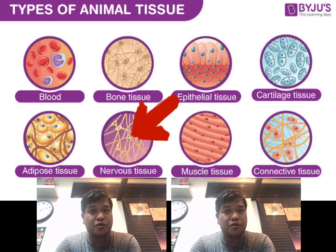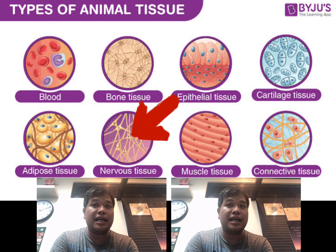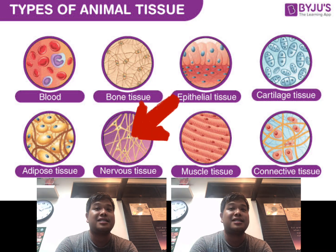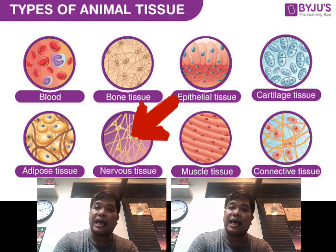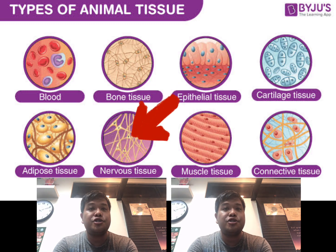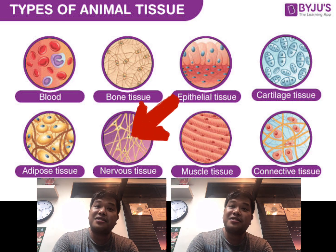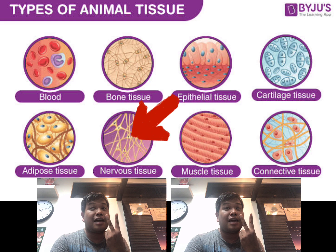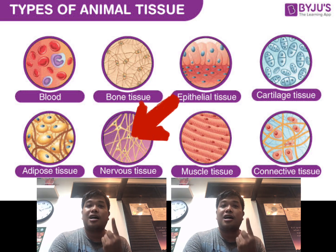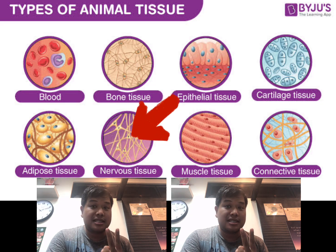Nervous tissue, the last one, is responsible for coordinating and controlling many activities in our body. It controls body movements and also sends and carries signals to and from the different parts of the body. Nervous tissues consist of two types of cells: conducting response cells and supportive cells.